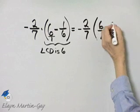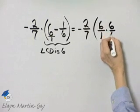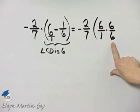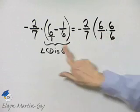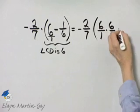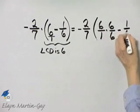Now remember what's happening here? I'm multiplying by 6 over 6. That's the same as multiplying by 1, so I haven't changed the value of this fraction. And then minus 1/6.